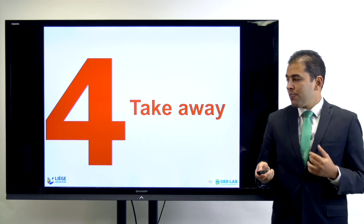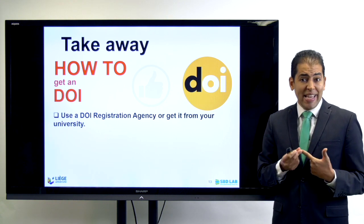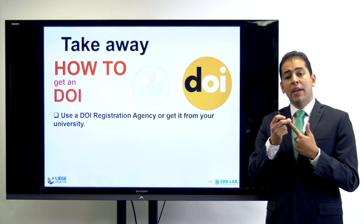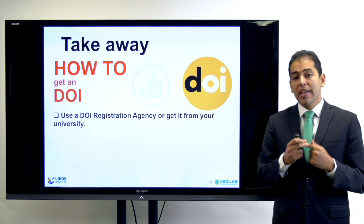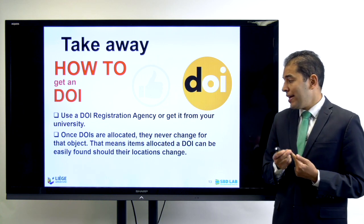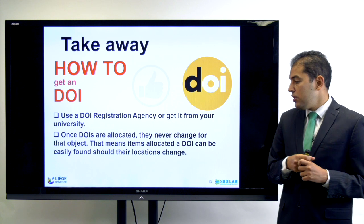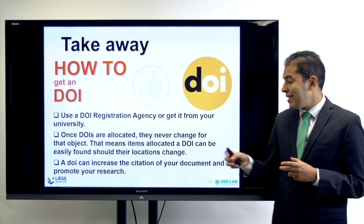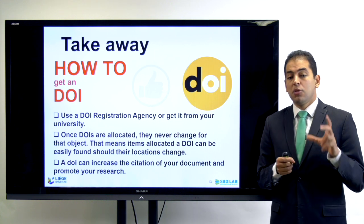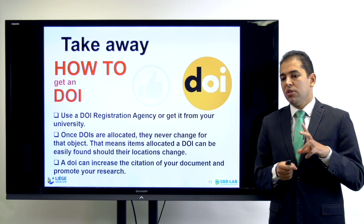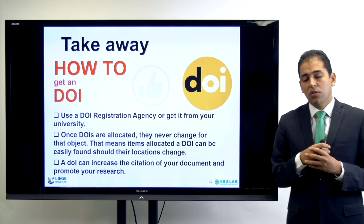To close the presentation with some takeaway messages: use a DOI registration agency to get your DOI number. If you are working in a university or research institution, they might be registered as a registration agency and can provide a DOI number for you. Once a DOI number is allocated, it never changes for that object — meaning the item can always be easily found and should not change in the future. Finally, a DOI can increase the citation of your work, promote your research, and you should make sure you have a DOI assigned, especially if you are publishing reports or documents that will not go through peer review or a traditional publishing house.